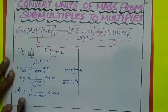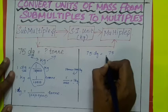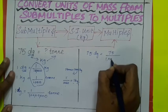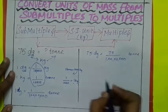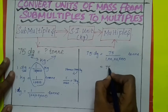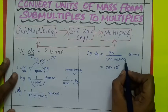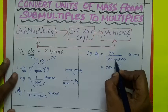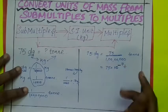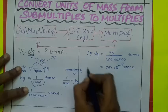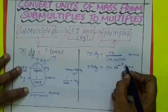Now substitute the values. 75 decigram is equal to 75 by 1 crore. Now we are going to convert it into powers. 75 into 10 power minus. Why minus? Because it is in divide sign. And how many zeros are there? 1, 2, 3, 4, 5, 6, 7. 7 zeros. So 10 power minus 7 ton. 75 decigram is equal to 75 into 10 power minus 7 ton.